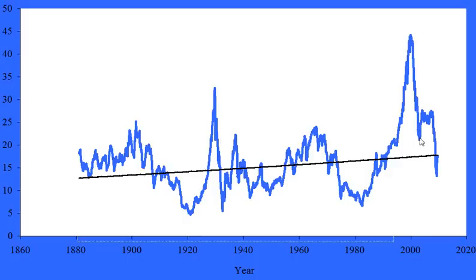We've seen that happen here as well, where there's been a big correction all the way down to the trend line, and we're bouncing right around it at this point in time. That trend line you can think of as a fair value line based on risk premiums, riskless rates, and growth. Ultimately, what we find is that there is, more often than not, a mean reversion in spite of the bubble periods — which simply means that after periods of exuberance, or irrational exuberance, the fundamentals ultimately win in the end.